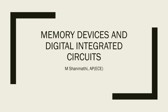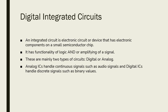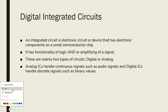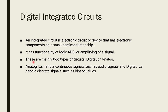Today we are going to see about digital integrator circuits. An integrator circuit is an electronic circuit or device that has an electronic component on a small semiconductor chip. It has functionality of a logic and or amplitude of a frequency signal. There are two types of circuits: one is digital and the other one is analog. Analog ICs handle continuous signals such as audio signals, and digital ICs handle discrete signals such as binary values.